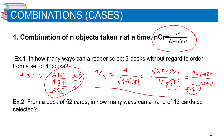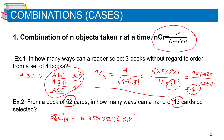Example number two: From a deck of 52 cards, in how many ways can a hand of 13 cards be selected? Using a calculator, we compute 52C13, which equals approximately 6.3501355596 times 10 to the power of 11.